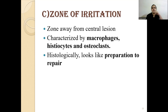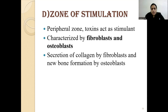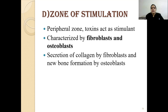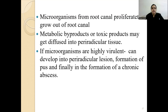The third zone is the zone of irritation, located away from the central lesion. It is characterized by macrophages, histiocytes, and osteoclasts, and histologically this zone looks like a preparation for repair. The fourth zone is the zone of stimulation, a peripheral zone where toxins act as stimulants. This zone is characterized predominantly by fibroblasts and osteoblasts: fibroblasts secrete collagen and osteoblasts form new bone — representing the repair zone.